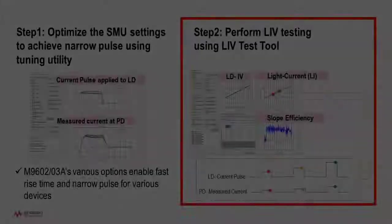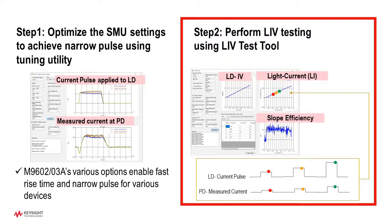Step 2: Perform LIV test with the SMU settings optimized using the LIV test tool. This tool helps to perform the LIV test and plot a graph. The graph is used to evaluate the linearity of the optical output power with different input current to identify the kink.